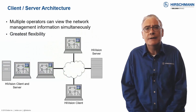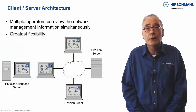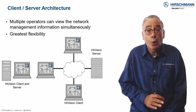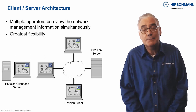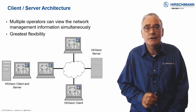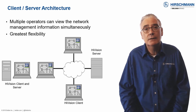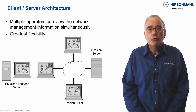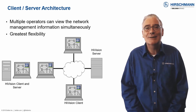The functionality of Industrial HiVision is divided into two components. The server is the core of the system, where all the processing takes place. The client supports the graphical user interface. For a small installation, running the server and the client on the same hardware offers a perfect solution.